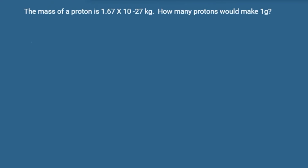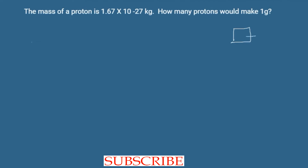The mass of a proton is 1.67 into 10 power minus 27 kilogram. How many protons would make 1 gram? Imagine a block equal to 1 gram. The mass of 1 proton is 1.67 into 10 power minus 27 kilogram. How many such protons combine to form 1 gram?